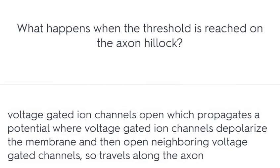What happens when the threshold is reached on the axon hillock? Voltage-gated ion channels open, which propagates a potential where voltage-gated ion channels depolarize the membrane and then open neighboring voltage-gated channels, so the signal travels along the axon.